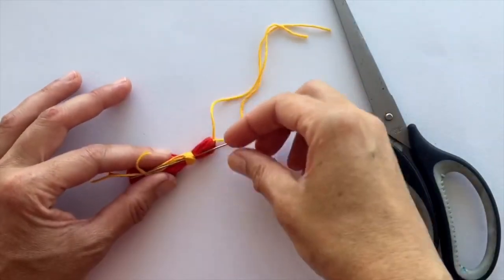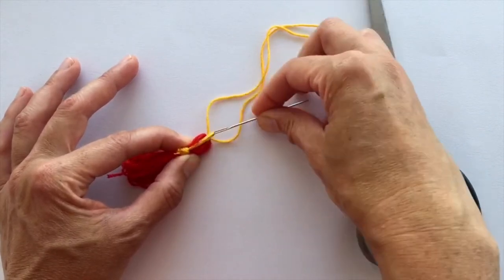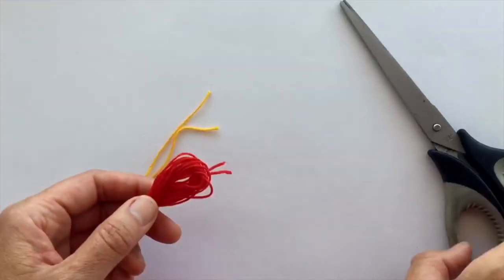Using the needle, tuck the needle under the wraps and cut out the excess thread. Cut the tassel strings at the bottom even.